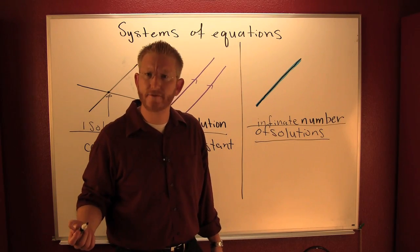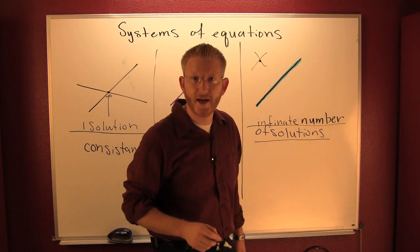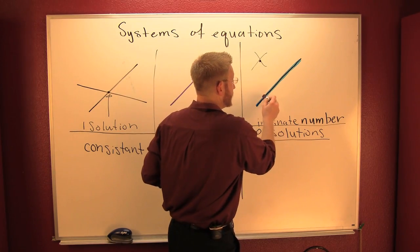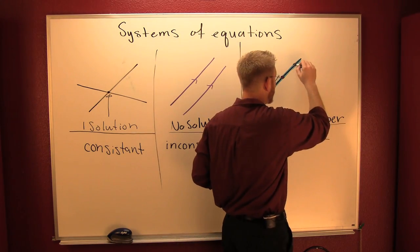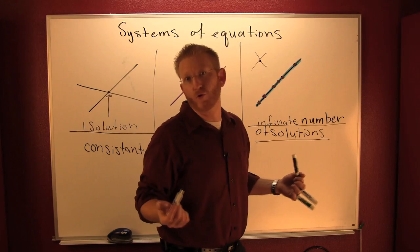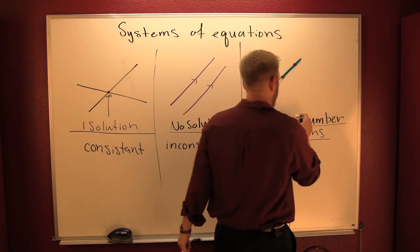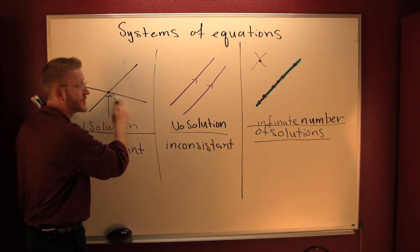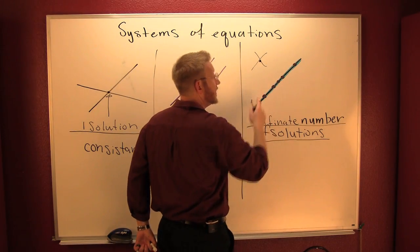It's important to point out that not every point is a solution. This point here is not a solution of that system because it doesn't lie on either one of the lines. This point, however, is a solution because it lies on there — and so is this one, and so is this one, and so is this one. Any point that lies on those lines is a solution to that system. There is an infinite collection of points in a line, so there are an infinite number of solutions. Along that line, this is the only point that lies on both those lines. Here, there are no points that lie on both those lines. Here, there's an infinite number of points that lie on both those lines.